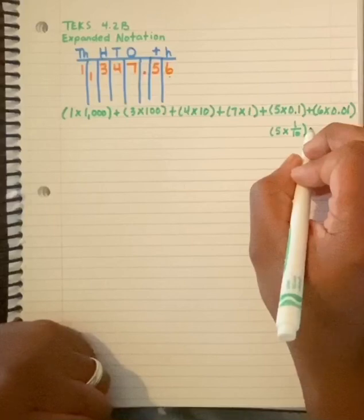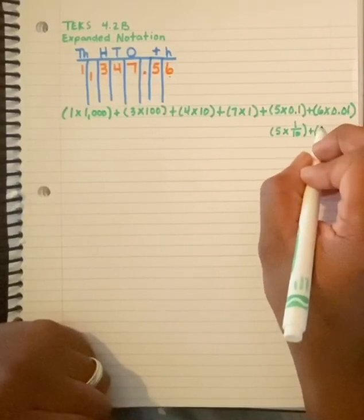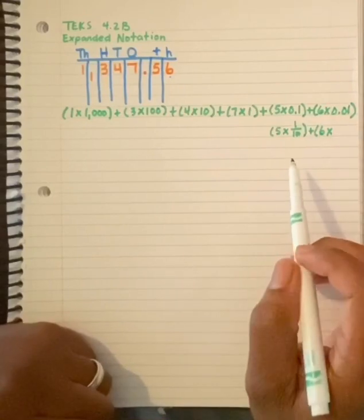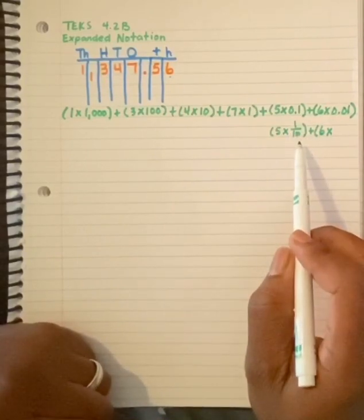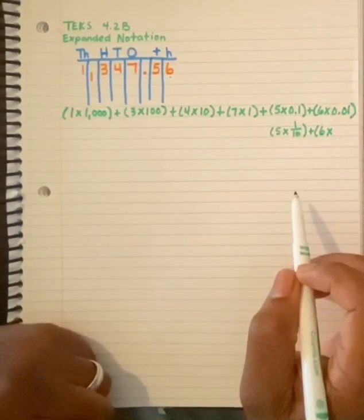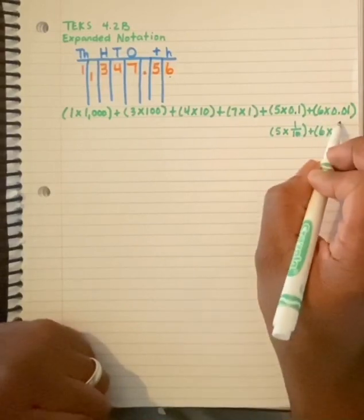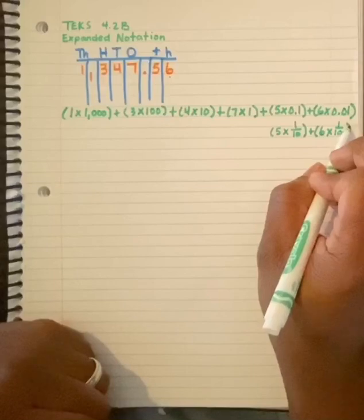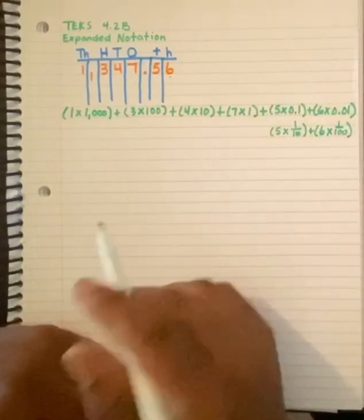Let's do the same thing for six and one hundredth. Well, one tenth was one over ten. So one hundredth would be one over one hundred. And that's expanded notation.